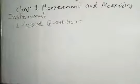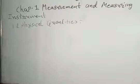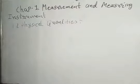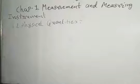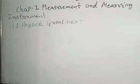Hello friends, welcome to Physics Universe. Today our topic is ICSC Standard 9, 1.2 Physical Quantities. Physical quantities include things like length, mass, time, velocity, acceleration, force, pressure, and density. These all are physical quantities which have physical values as well as standard values.